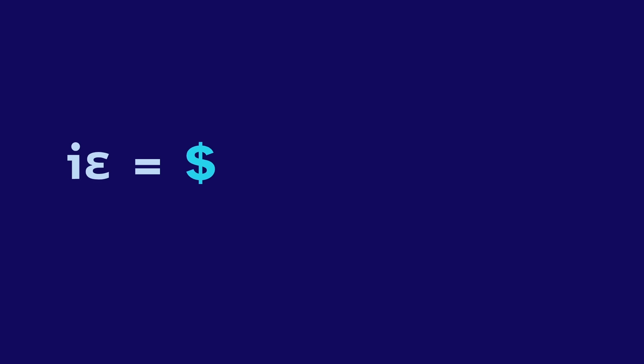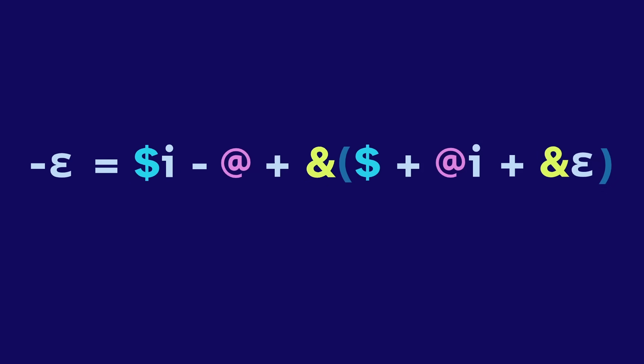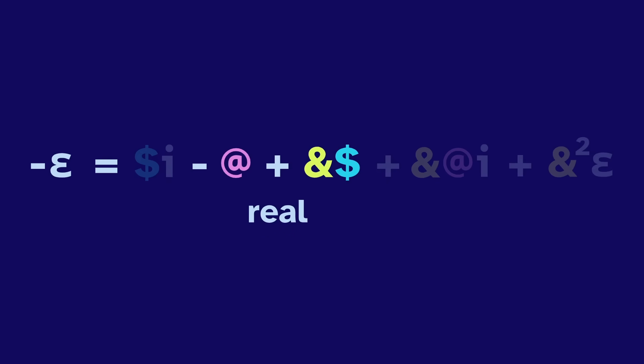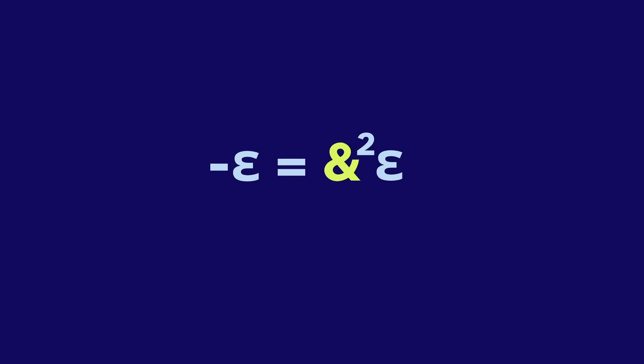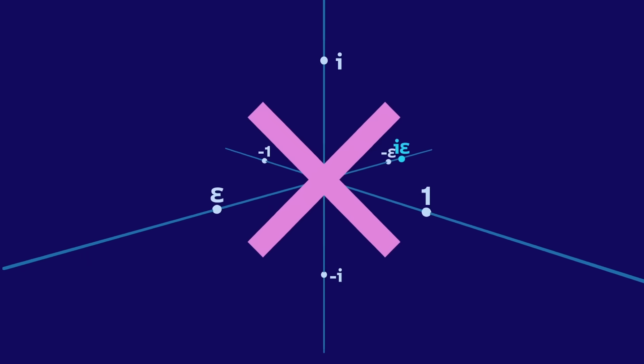We'll say i times epsilon is some dollar plus at i plus and epsilon, where these are all real variables. Then if we multiply by i, on the left we get negative epsilon. On the right we distribute, then replace i epsilon with dollar plus at i plus and epsilon, and distribute again. This is real, but the left has no real part, so it should equal zero. And this is imaginary, but the left has no imagination, so it's also zero. It's only the dual that has a non-zero coefficient, negative one. But and is real, so it can't square to negative one. This fails. I epsilon can't go in these three dimensions.